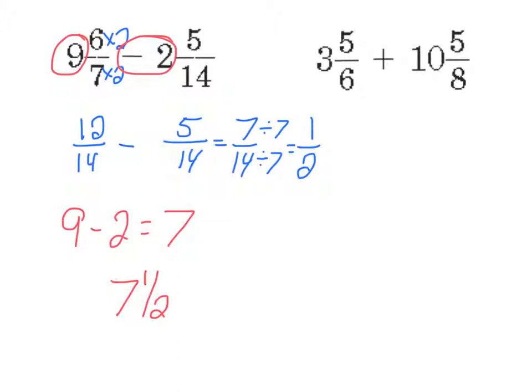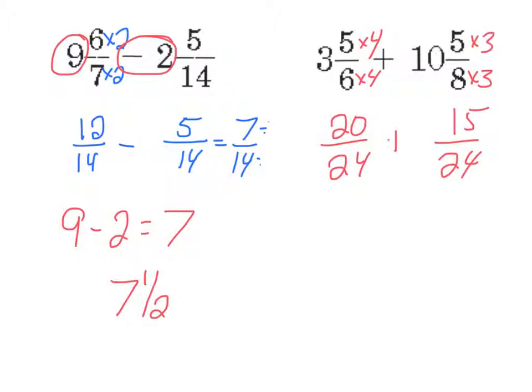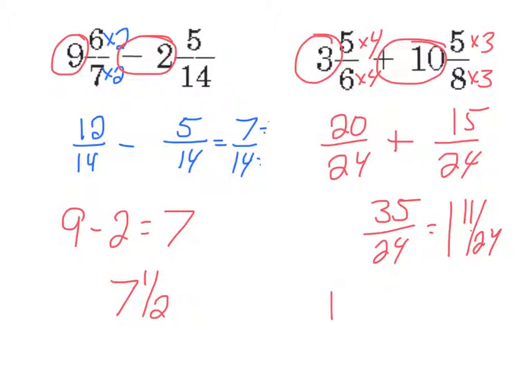For my other one, 3 and 5 sixths plus 10 and 5 eighths. I'm going to do this one quick. I use a common denominator of 24. You could use 48 if you wanted to. You're just going to have to do some simplifying. To get from 6 to 24 I multiply times 4. So I do the same thing up top and get 20. To get from 8 to 24 I multiply times 3. So I do the same thing up top and get 15. Add them together and I get 35 twenty-fourths. Improper fraction. 24 goes into 35 one time with 11 twenty-fourths left over. Then I go back and take care of my whole number part. 3 plus 10 is 13. Plus 1 and 11 twenty-fourths gives me 14 and 11 twenty-fourths.